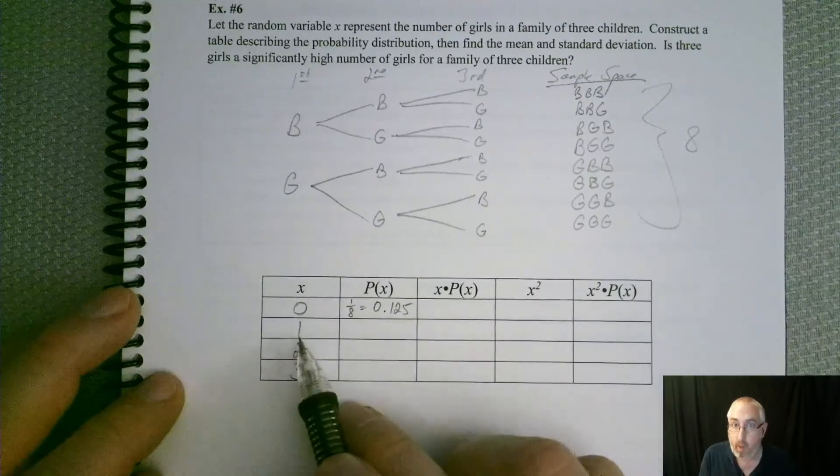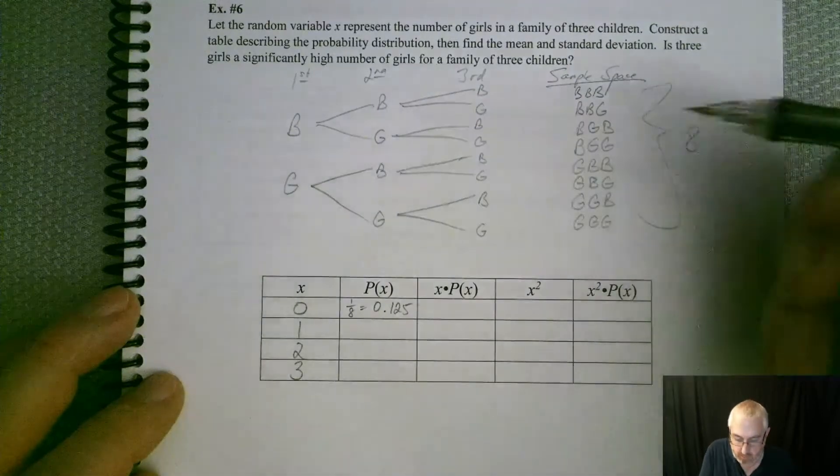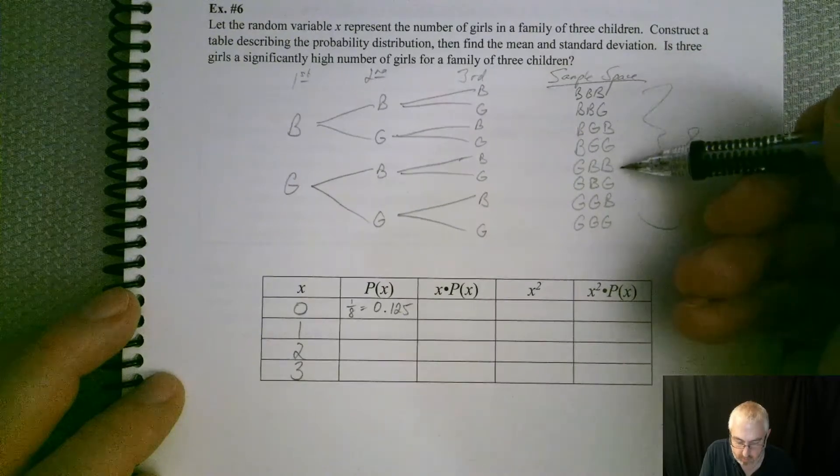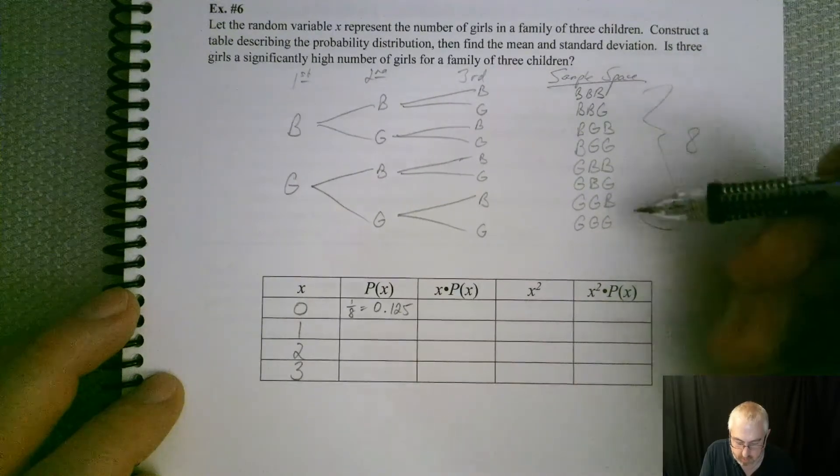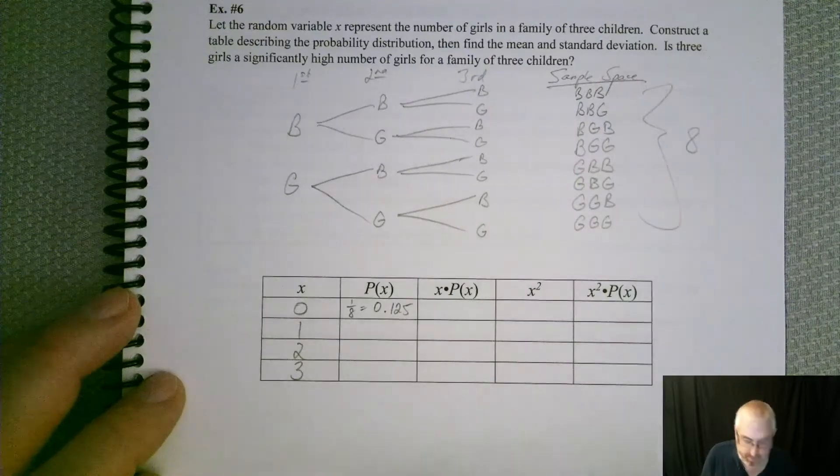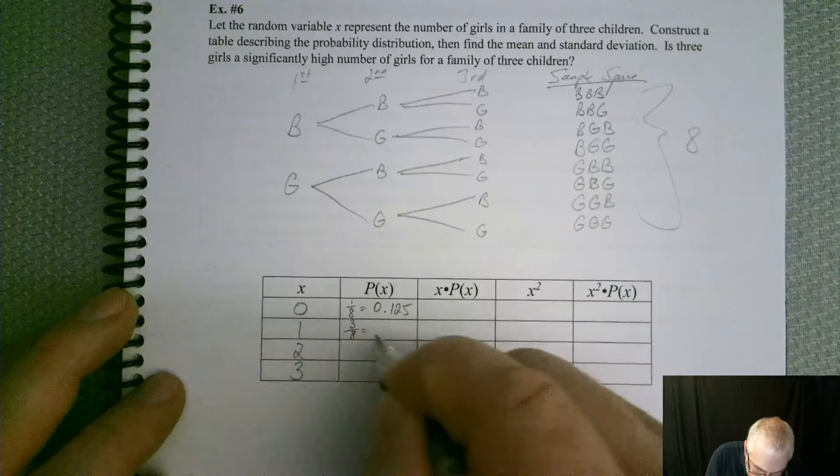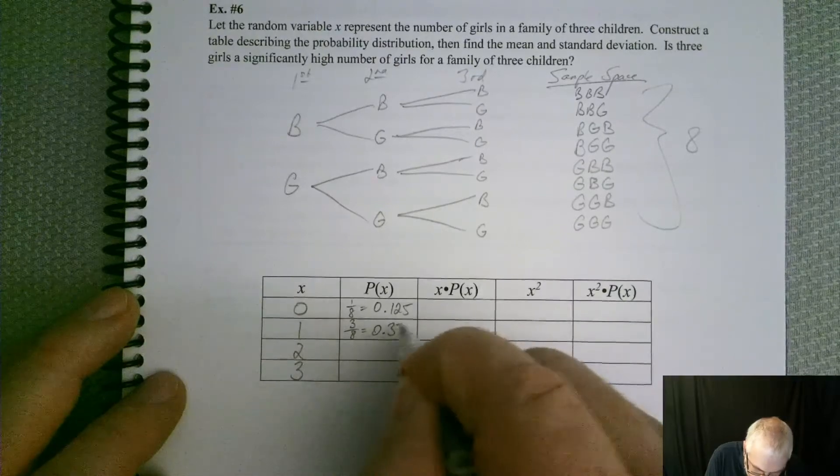What about one girl? Well, we've got one girl here, one girl here, one girl here, and that looks like about it. So three out of eight. So 0.375.